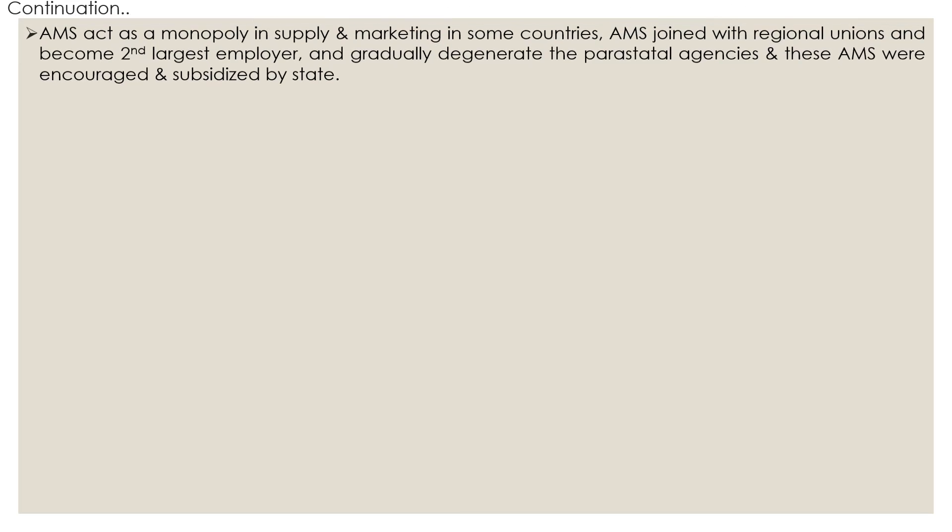In many countries, Agricultural Marketing and Supply Cooperatives and their regional unions have become the second largest employers after the government, because they work so efficiently and help farmers across different parts of Africa. We will discuss AMS cooperatives and their functions in detail in coming sessions. Until then, go through the areas we have discussed. If you have any queries, please let me know.